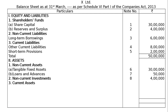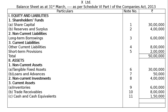Then current assets — there is no separate note for current assets heading itself. Under it comes inventories, note number 9: 6,00,000. Then trade receivables, including debtors and bills receivable, note number 10: 8,00,000. Then cash and cash equivalents, note number 11: 1,50,000. The total of the assets side also comes to 50 lakhs. Both sides are tallying and this is the final answer.